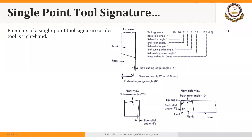This is the standard sequence of mentioning these angles: first the back rake angle, then side rake angle, end relief, side relief, end cutting edge angle, side cutting edge angle, and finally the nose radius. For example, a tool may be specified as: 10° back rake, 20° side rake, 7° end relief, 6° side relief, 8° end cutting edge angle, 15° side cutting edge angle, and 0.8 mm nose radius.